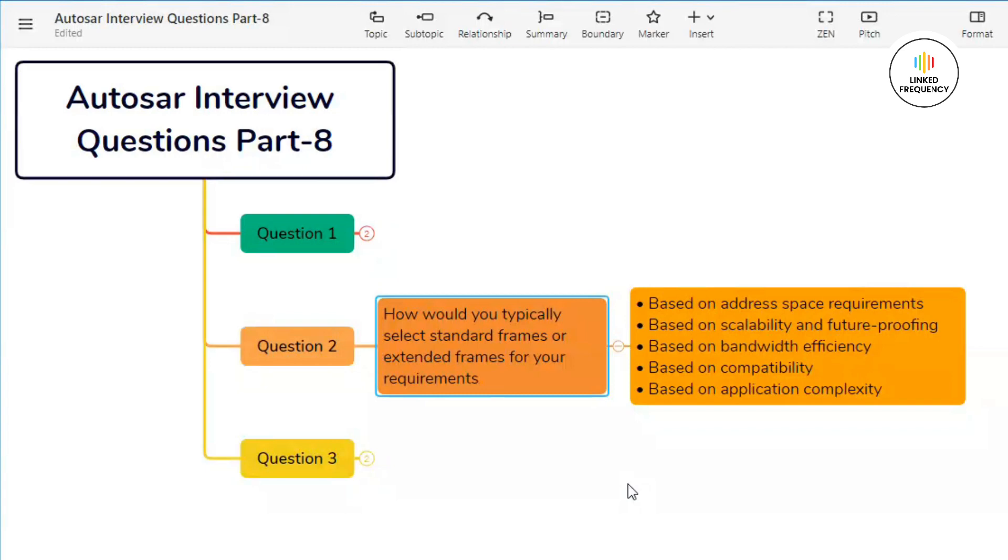The first one is based on address space requirements. Let's talk about standard frames first. Choose standard frames when the application has a limited number of unique identifiers, or when the existing address space (that is 11-bit identifier) is sufficient to address all the nodes and message types within the network.